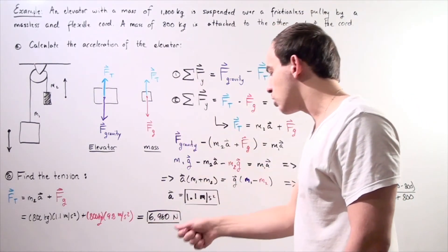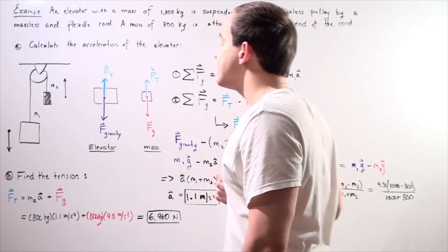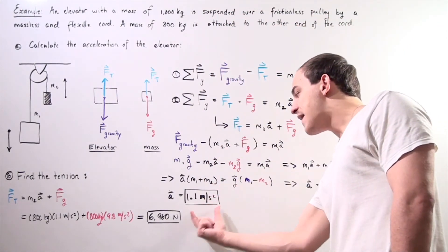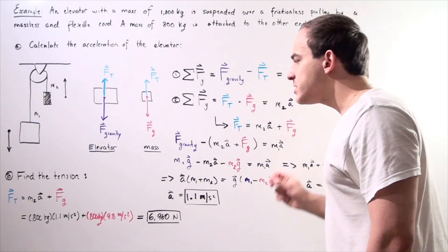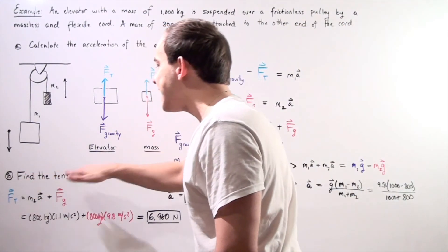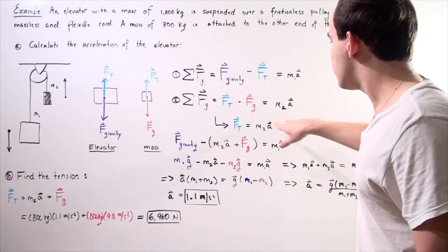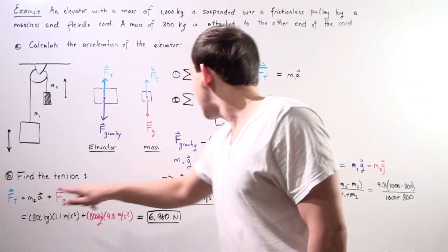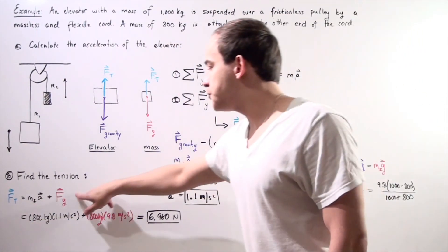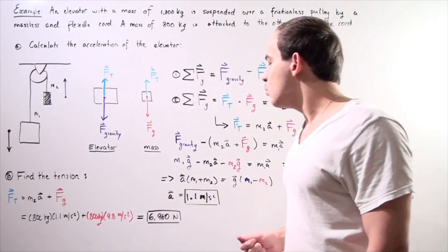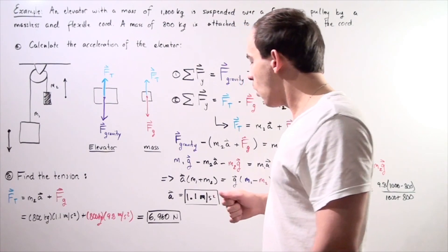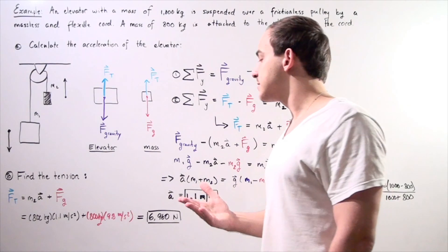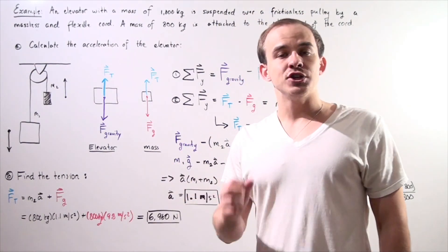The elevator moves downward and mass two moves upward, both at 1.1 meters per second squared. Using this acceleration in the tension equation — T equals M2 times A plus the gravitational force on M2 — we get the tension in the cord is 6,960 newtons, approximately 7,000 newtons.